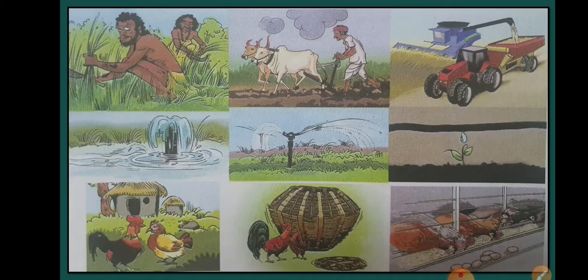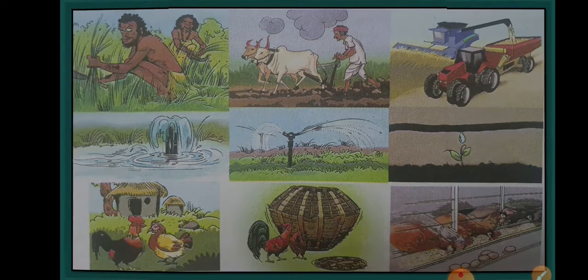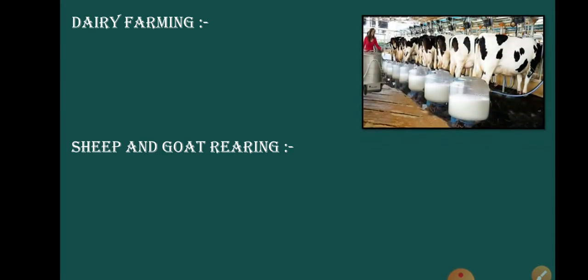We can also see that poultry farming has been improved consistently. Now we will see the various types of animal husbandry. The first one is dairy farming. Rearing different animals and obtaining various produce and products from them are included in agriculture. So dairy farming — cows, oxen, buffalos, etc. — are reared for agriculture-related work and also used for dairy work.